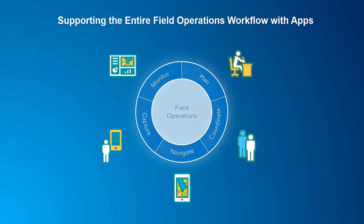There's more to fieldwork than just collecting or editing data. The five phases of field operations include: planning, coordinating, navigating, capturing, and monitoring. First, we plan — field work is expensive and should be done as efficiently as possible, with prioritization of what gets done first. Next, we coordinate to ensure the proper work gets assigned to the proper crew. Those crews then navigate using the most efficient route, gather map-centric field data, and finally real-time feeds are monitored to ensure focus on top priorities.